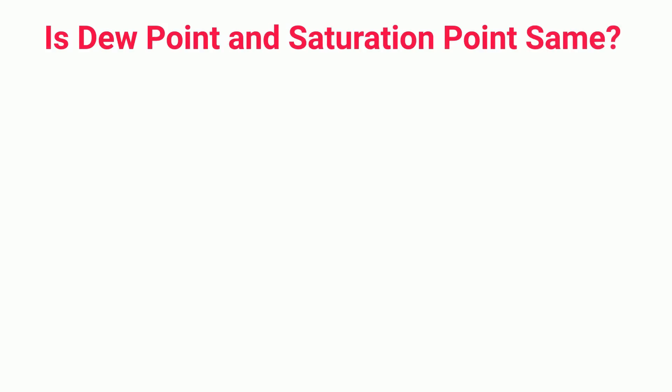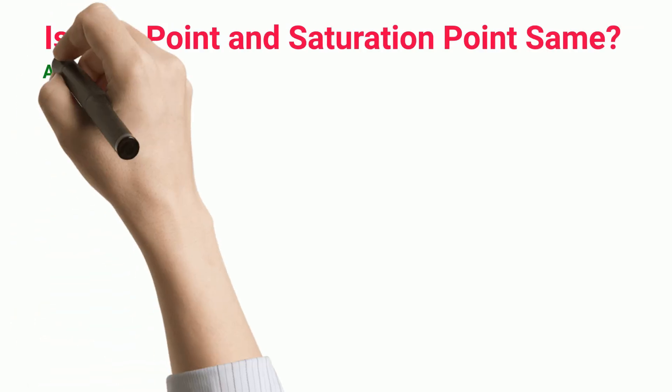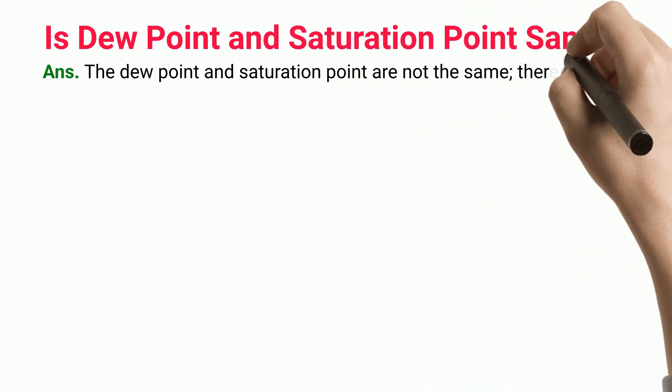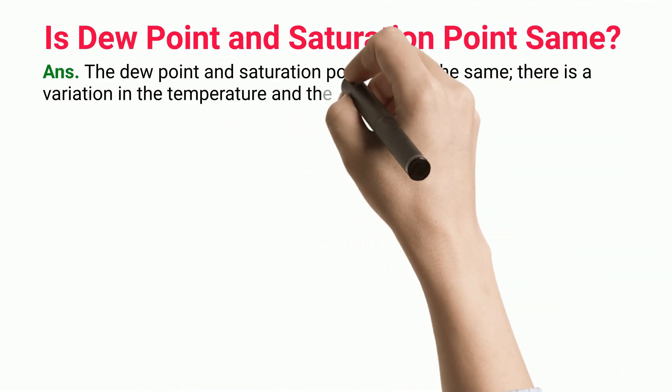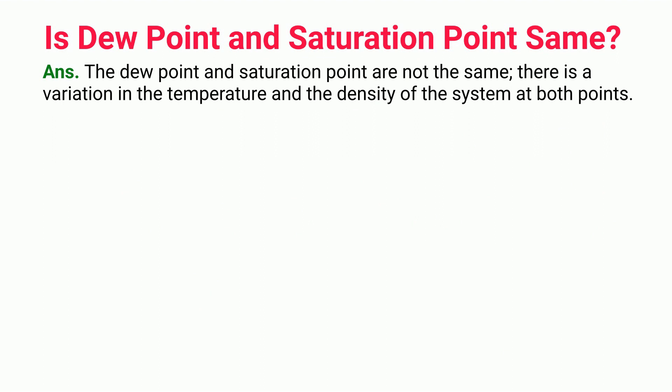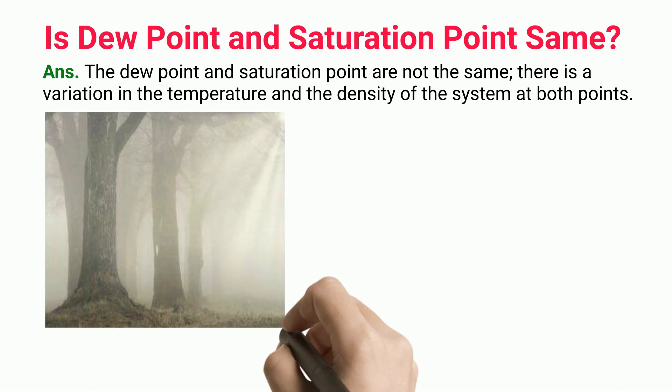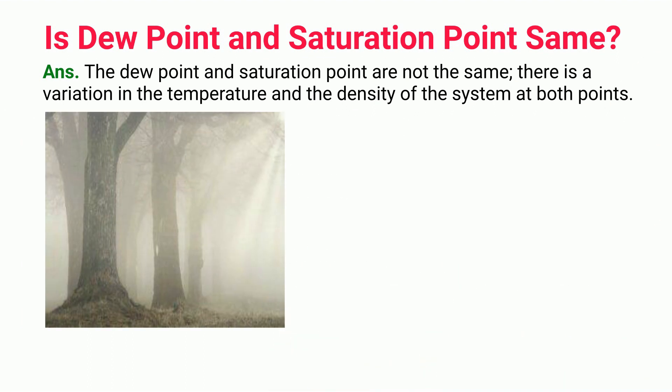Are the dew point and saturation point the same? The dew point and saturation point are not the same — there is a variation in the temperature and density of the system at both points. At the saturation point, the density of water vapors in the air is very high and the temperature is equal to the atmospheric temperature. If the temperature of the system falls below the atmospheric temperature, the tiny condensed water vapors will condense further to form drops of water.